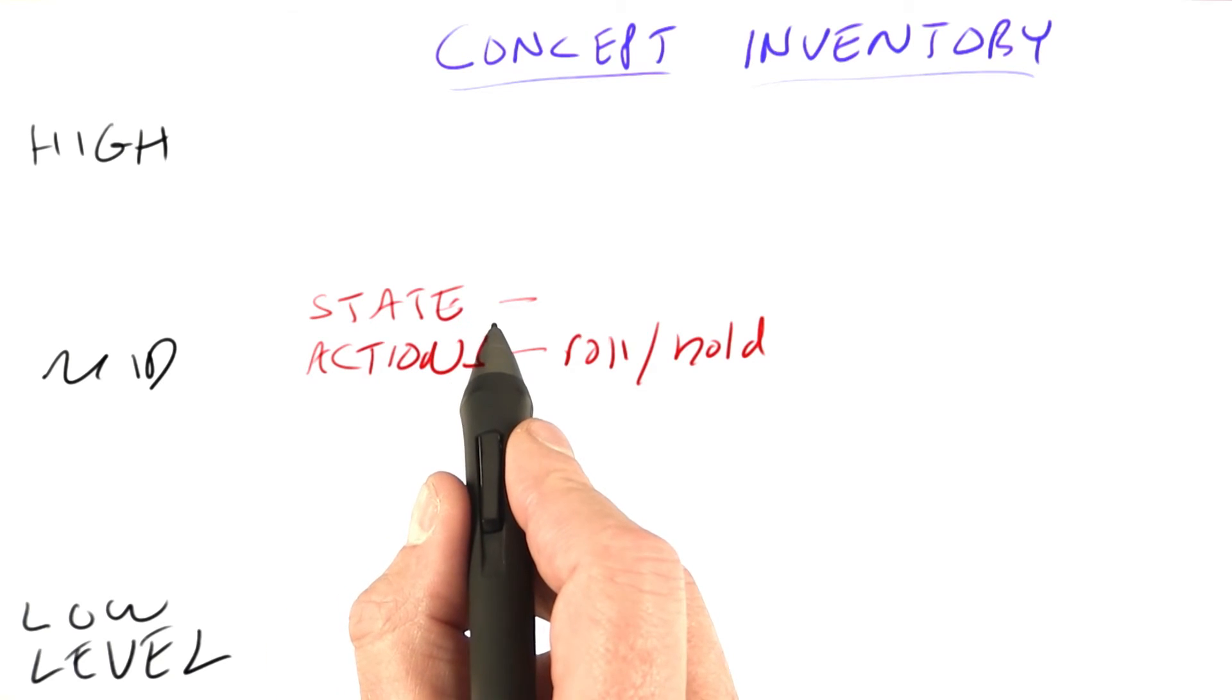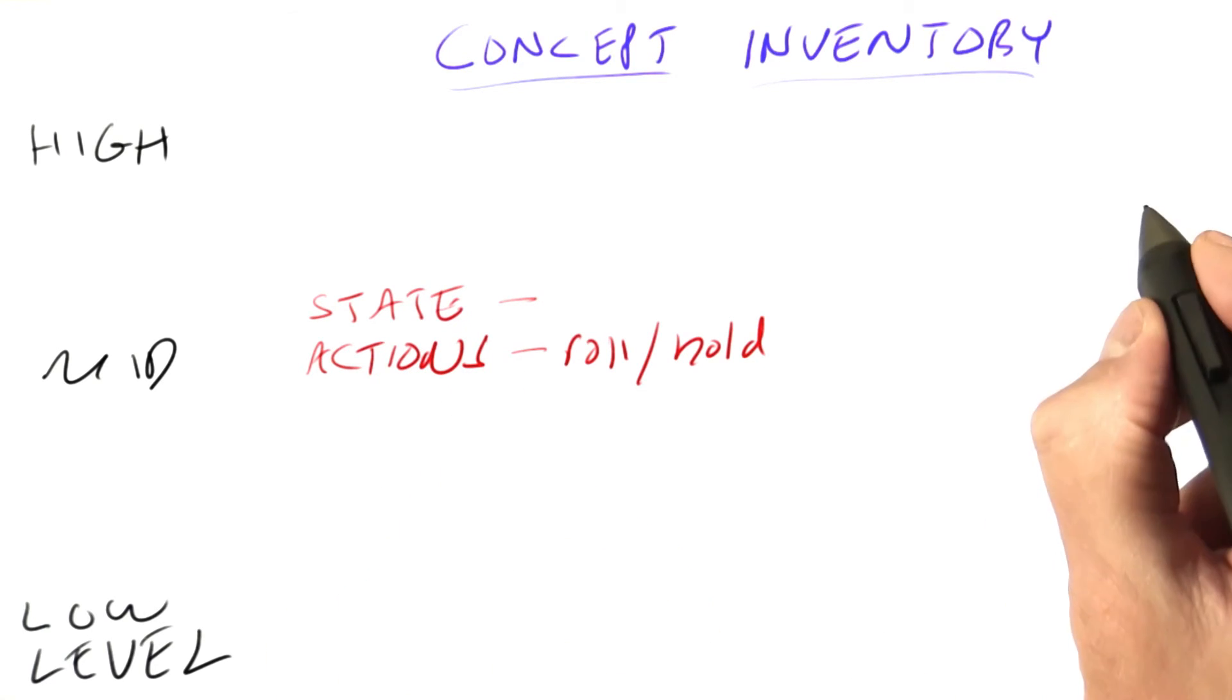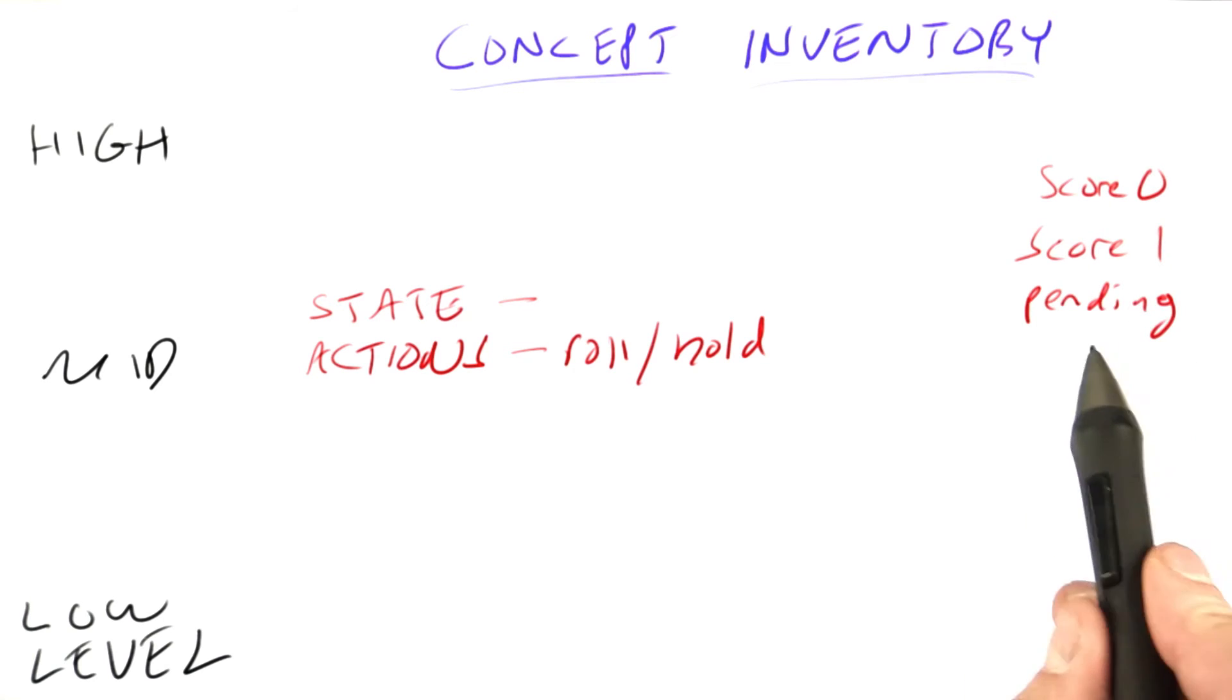Here's some candidates for what's in the current state. First, the things that were on the scoreboard. The scoreboard, remember, had three things.